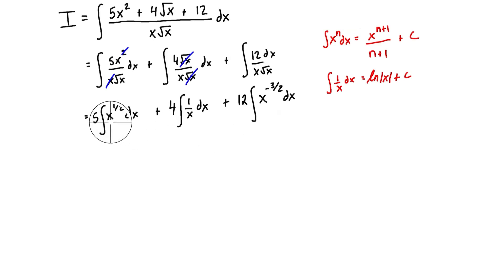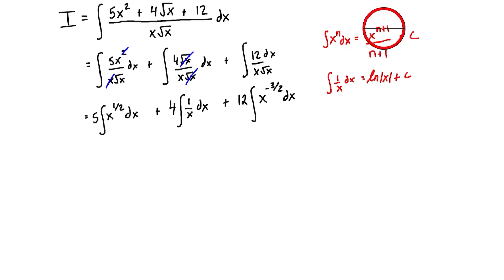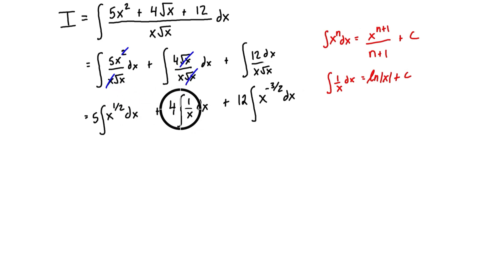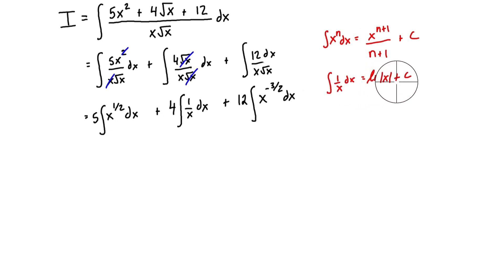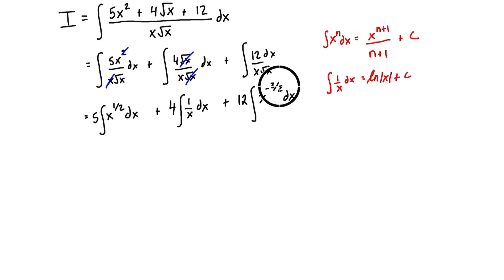Looking at our three terms: the first has the form of the integral of x^n dx, with n = 1/2. The second is the integral of 1/x dx, so it's just going to be ln|x|. The third also has the form x^n, where n = -3/2, and we'll take that into consideration in that term. Let's go through one at a time.